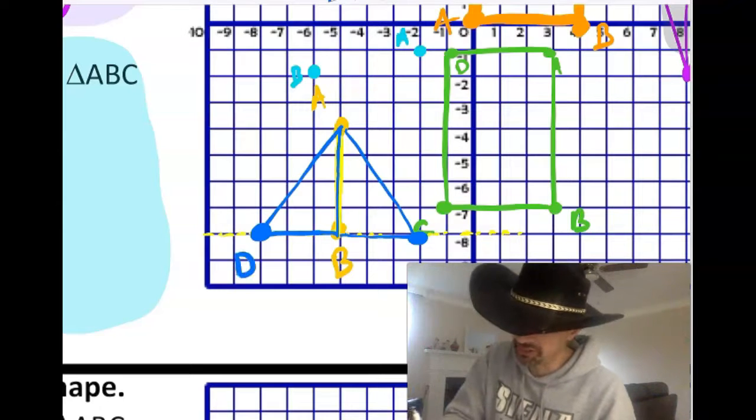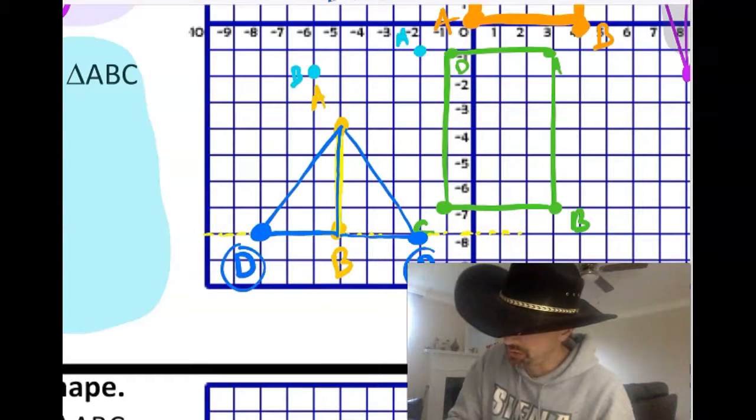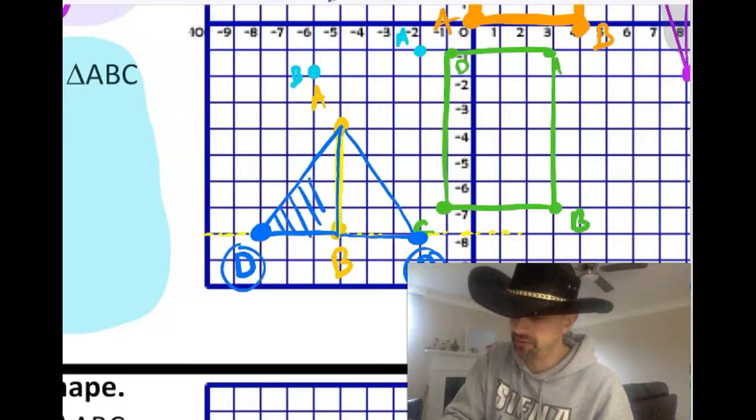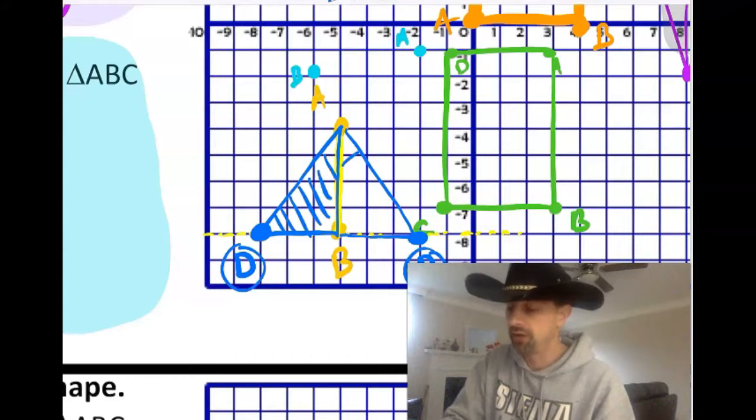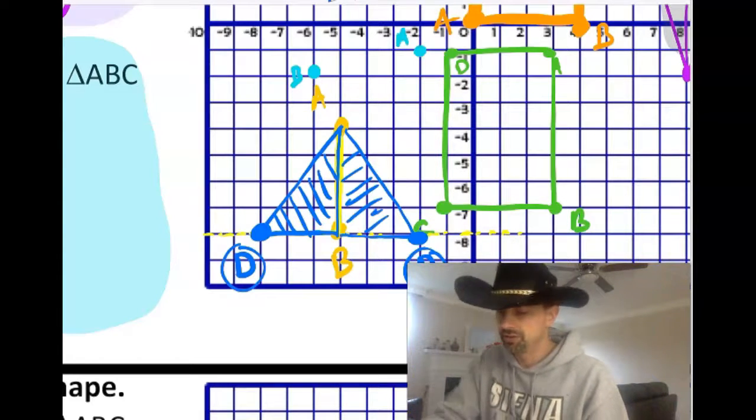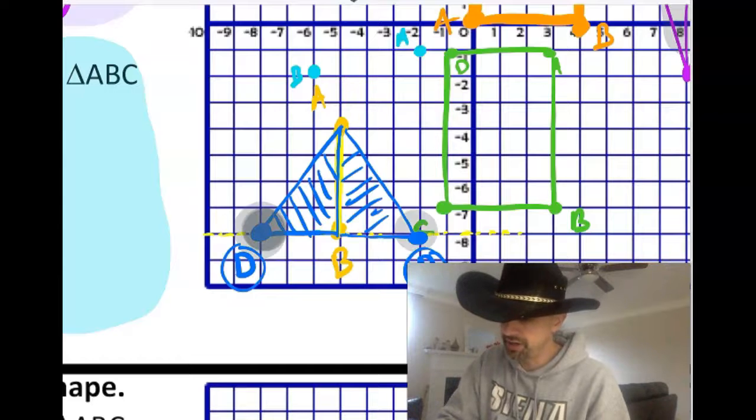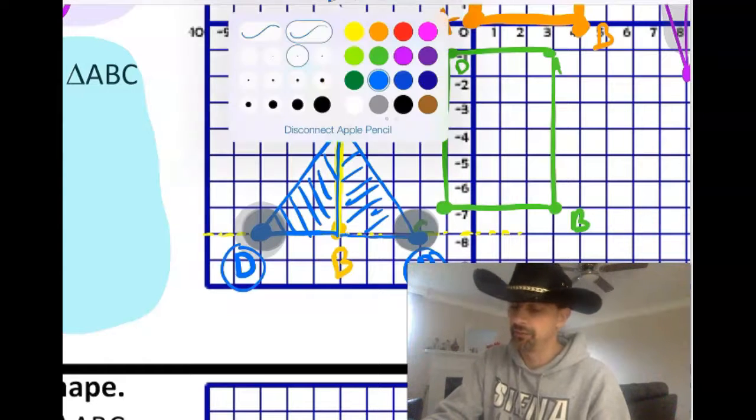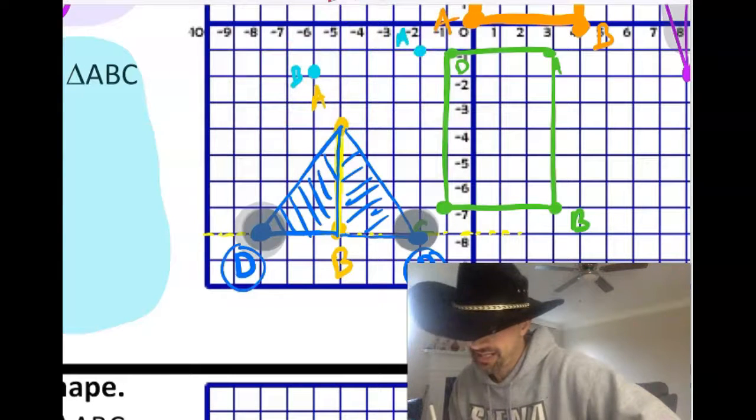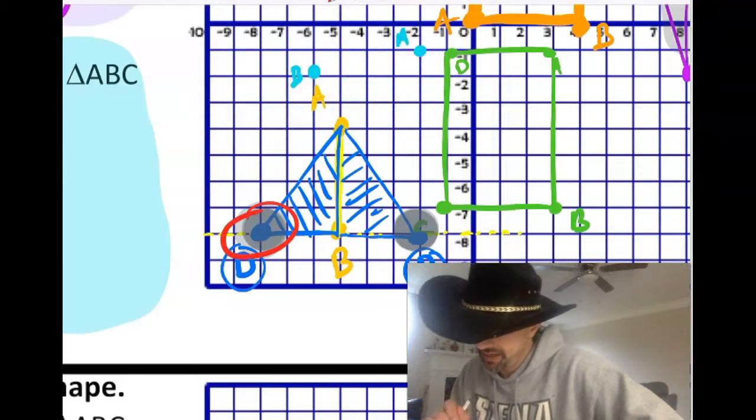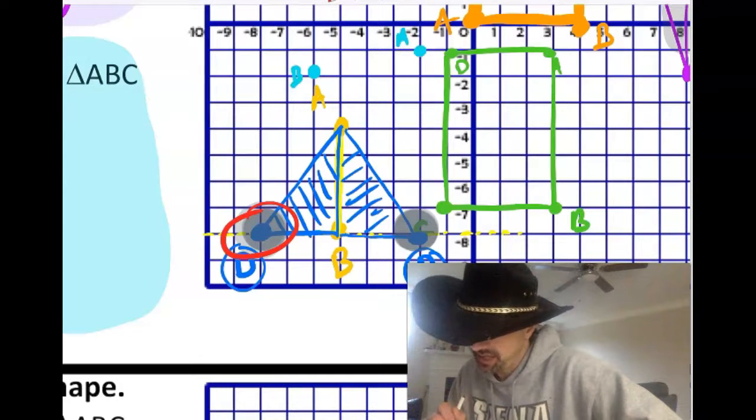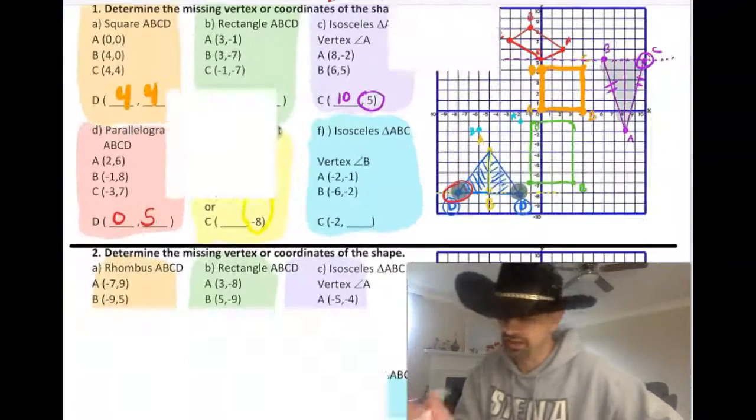If this is 4, it wants me to go 3 this way or 3 this way because that would be 5. So there's two choices. It could be here or it could be here. And I would have a 3, 4, 5 triangle here or I would have a 3, 4, 5 right triangle here. So those two points right there and right there are -8,-8, and -2,-8.